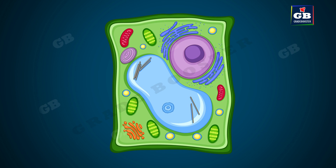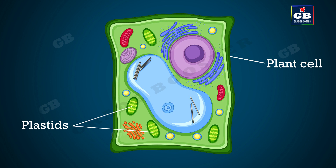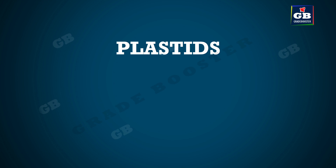These are the cell organelles that are found only in plant cells. Plastids are of two types.